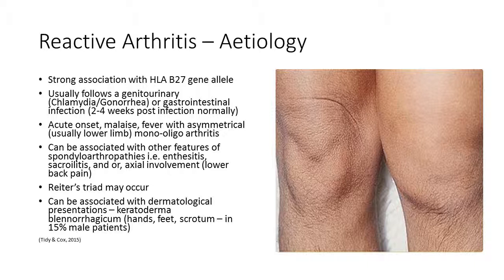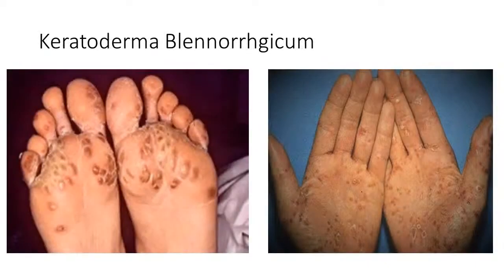Reiter's triad can occur. The dermatological manifestation associated with this condition is keratoderma blennorrhagicum, affecting the hands, feet, scrotum, and usually the plantar aspect of the hands and feet — something we really need to be aware of in terms of presentation as podiatrists. Clinically it presents as thick hyperkeratotic plaques.